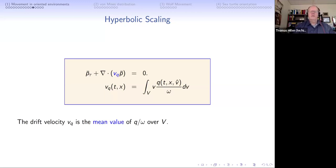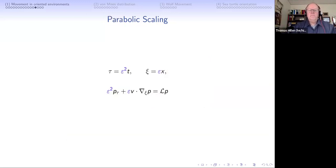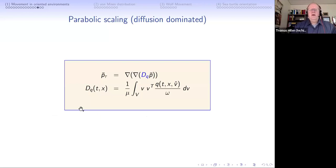v_q is the average velocity of q over omega - the average direction of your environment - which means in the hyperbolic scaling, particles follow the average direction of the environment. The drift velocity is the mean value of q over omega over V. If you have undirected orientation, like a road where you can go up or down either way, then this integral integrates out to zero and you have no preferred direction.